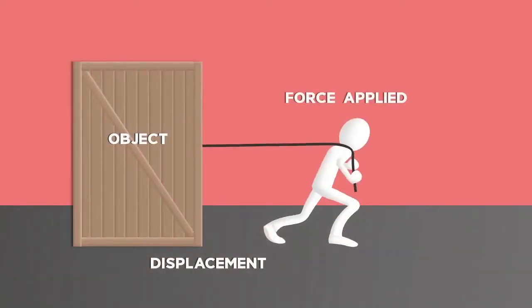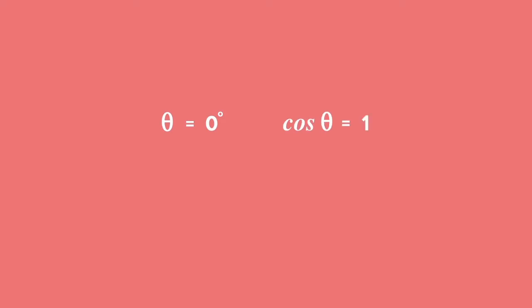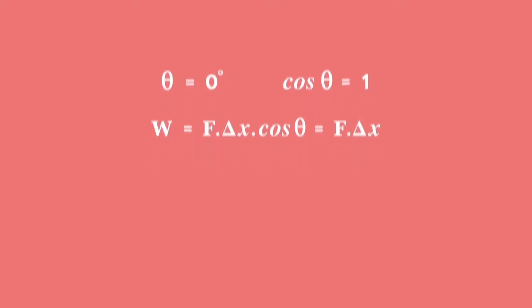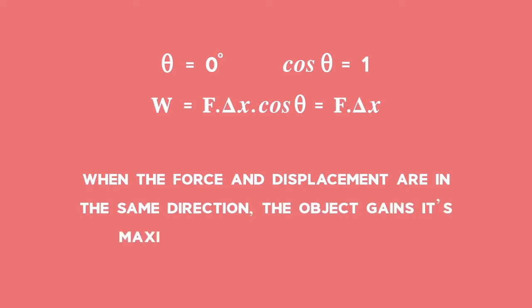When the force applied to and the displacement of the object are in the same direction, there is no angle between the force and the displacement. The work done is equal to the magnitude of the force applied times the magnitude of the displacement. When the force and displacement are in the same direction, the object gains its maximum energy from the force.